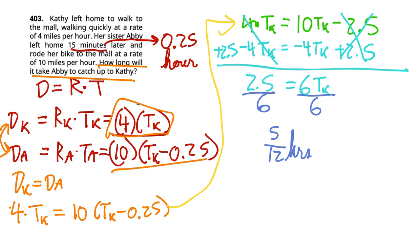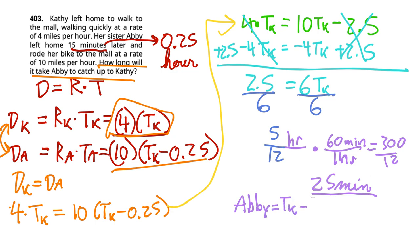That's 5 twelfths of an hour. 5 over 12 hours. Now, here's the tricky part. I thought this would be cool saying we're going to be able to find out an integer number of hours. So what we're going to do is multiply by 60 minutes over one hour. So it's going to be 5 times 60, which is 300 over 12. 25 minutes. That's how long Kathy is walking. But remember, Abby's time is TK minus 15, since we're in minutes. So we're going to say 25 minus 15, which is 10 minutes. Oh, my gosh. She caught her rather quickly.